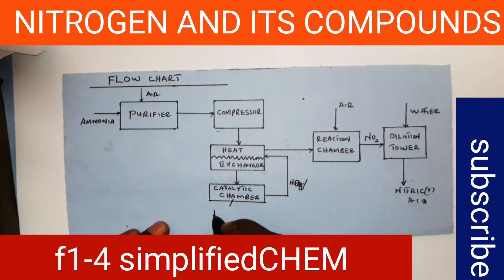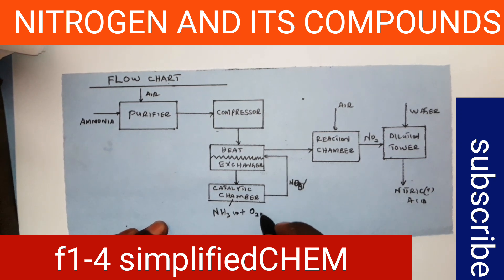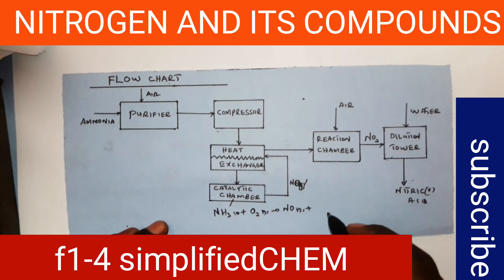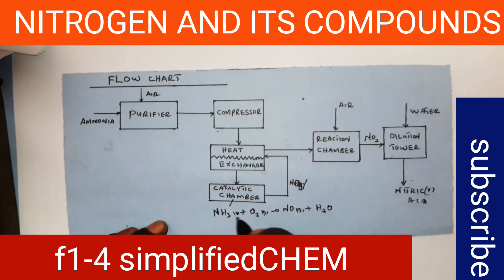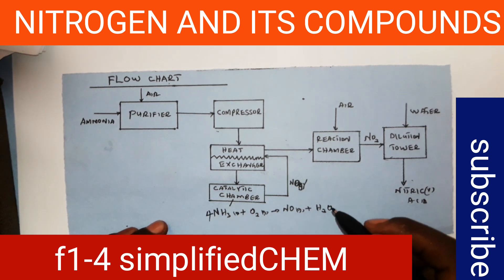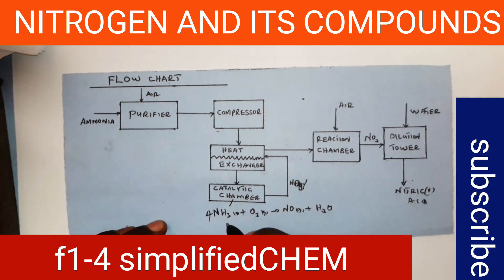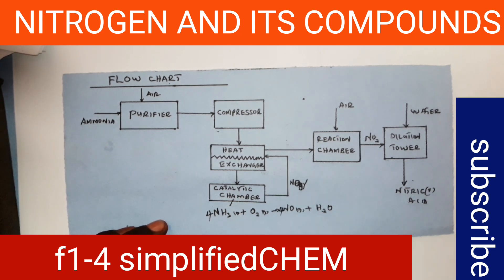The reaction is: ammonia gas plus oxygen gas gives nitrogen monoxide gas plus water. To balance the equation, we place 4 in front of ammonia, 4 in front of nitrogen monoxide, then balance nitrogen — put 4 here. Then balance hydrogen — put 6 in front of water. Then the total number of oxygen atoms is 10, so we place 5 in front of oxygen. The balanced equation is: 4NH₃ + 5O₂ → 4NO + 6H₂O.